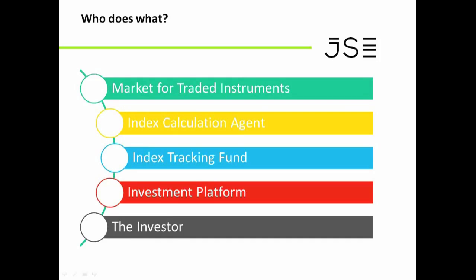The index tracking fund is also quite tightly regulated. In an ETF or unit trust environment, your money as an investor is completely protected and ring-fenced. The asset manager can't go and spend your money on a trip overseas or a new yacht. They are required by law to invest your money into those assets as defined by the index, with quite tight regulation around that — which is very important because you don't have full transparency in that process.